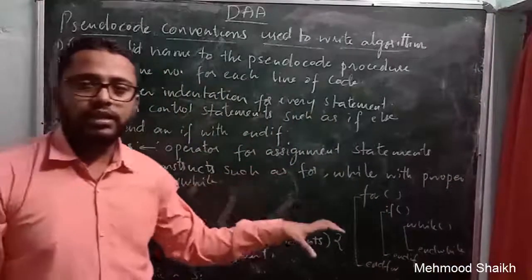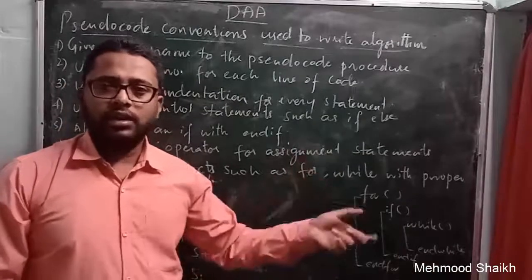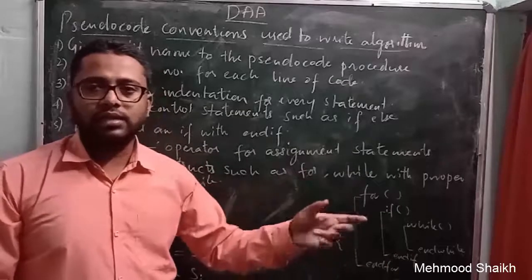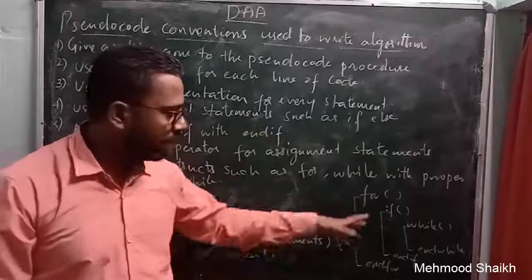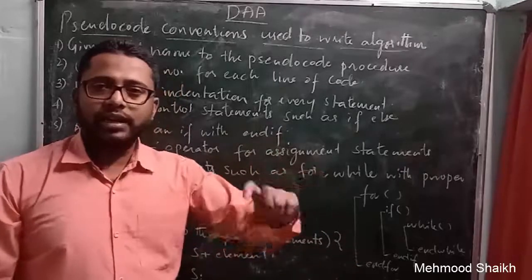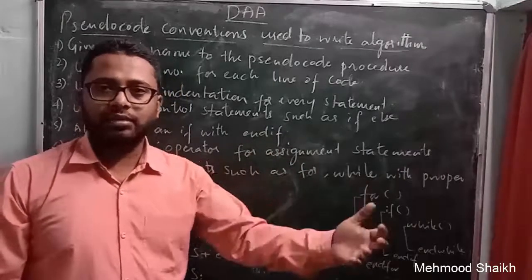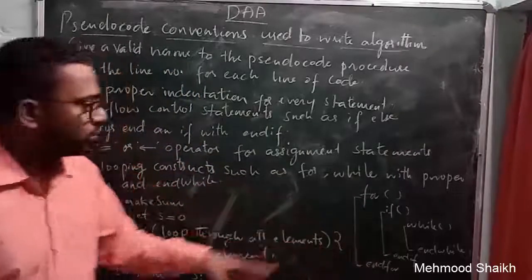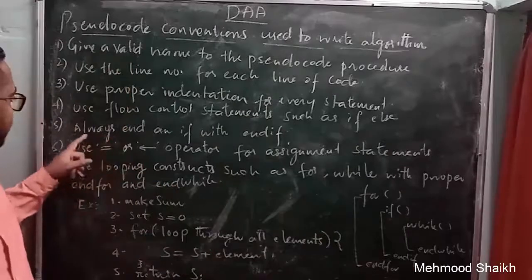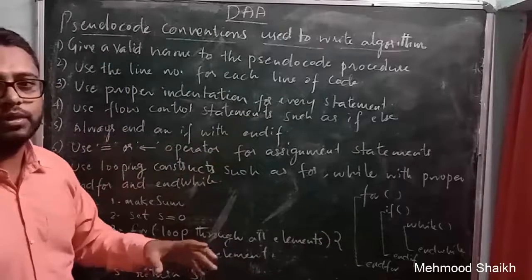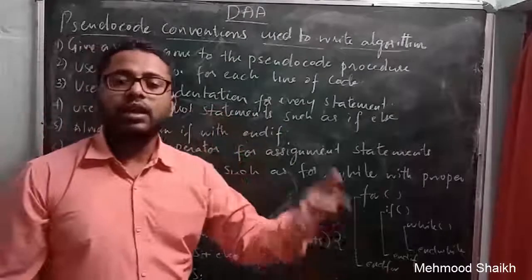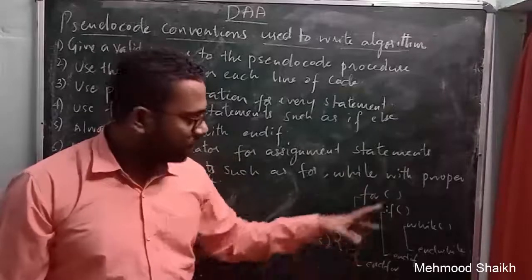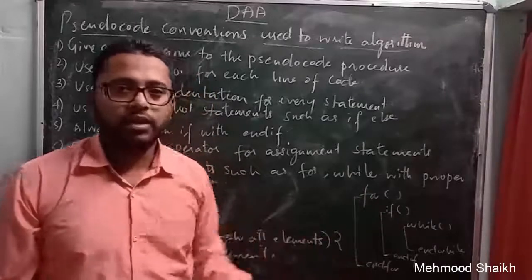Since you are writing a pseudocode, and pseudocode is not a formal way of writing an algorithm — it is an informal or unofficial way more like English language which can easily be understood — you can follow this way of writing. So the convention is: always end an if with 'end if', a for with 'end for', and a while with 'end while'.